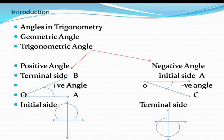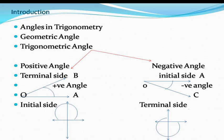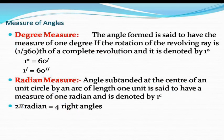In this diagram, ray OA is rotated in the anti-clockwise direction and comes to position OB, so a positive angle is formed. Here OA is the initial side and OB is the terminal side. In the next diagram, ray OA is rotated in the clockwise direction to reach position OC, giving a negative angle. OC is the terminal side and OA is the initial side. This is the basic difference between the geometrical angle and the trigonometric angle.